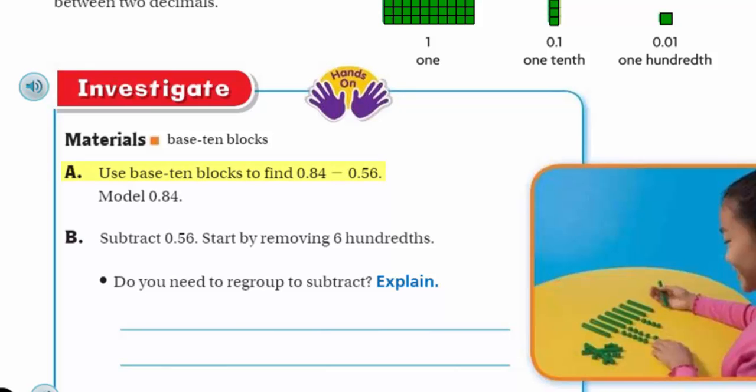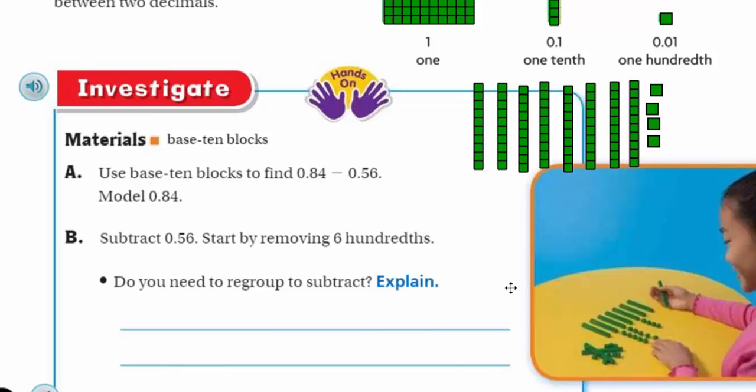So let's look at A. It says use base-ten blocks to find 84 hundredths minus 56 hundredths. Model 84 hundredths. Model it means I ought to show it. So I have 84 hundredths. I need 8 tenths. Well, there's my 84 hundredths. I have 8 tenths and 4 hundredths. Now I need to subtract 56 hundredths. So start by removing 6 hundredths.